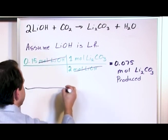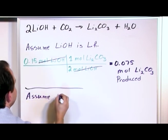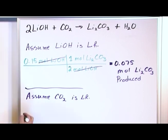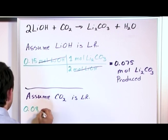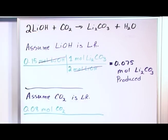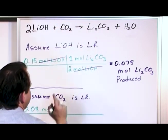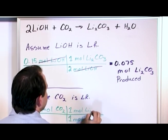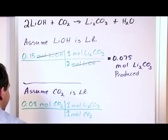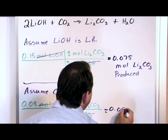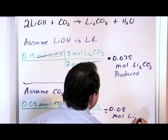Now let's go the other direction and assume that carbon dioxide is the limiting reactant, and see how it compares. In our problem, we started with 0.08 moles of carbon dioxide. In this case, let's pretend this is the limiting reactant — so we have tons of lithium hydroxide and we don't care how much. The molar ratio is 1 mole of CO₂ to 1 mole of Li₂CO₃. So we calculate: 0.08 moles CO₂ × (1 mol Li₂CO₃ / 1 mol CO₂) = 0.08 moles of Li₂CO₃ produced.